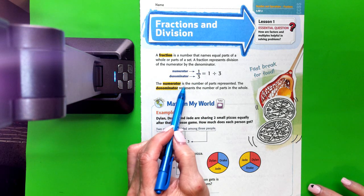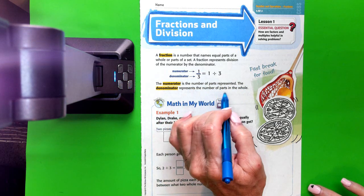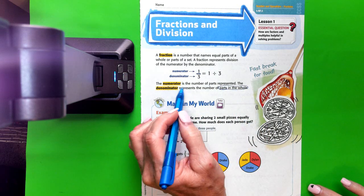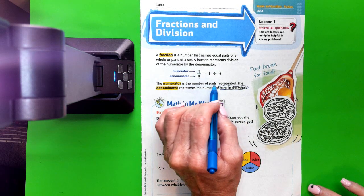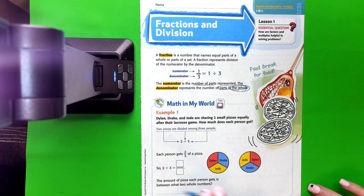The numerator is the number of parts represented, and the denominator represents the number of parts in the whole. So the numerator is the number of parts, denominator is the whole.